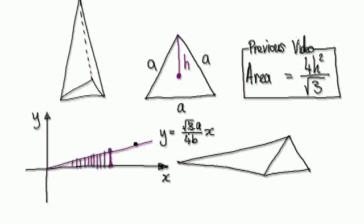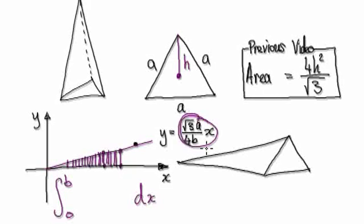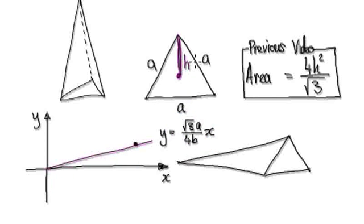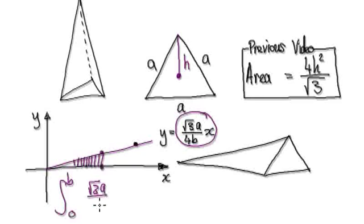What is the height at each point? The height is given by y = (√3a)/(4b)·x. So as we're moving along and summing everything from 0 to b, at each step in the x-direction the height is √3a/(4b)·x. Once we've got the height, we can put it into the area formula.